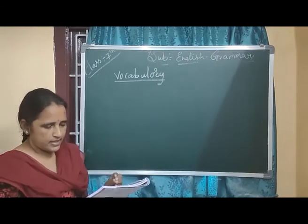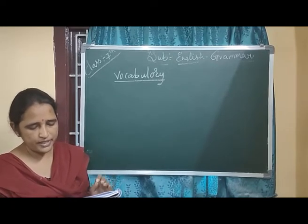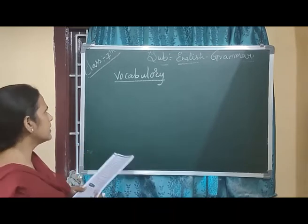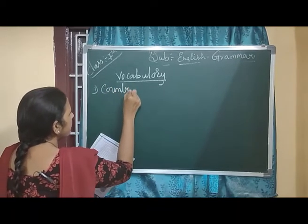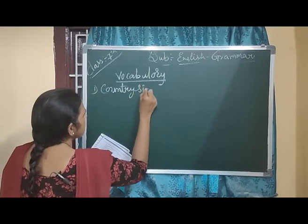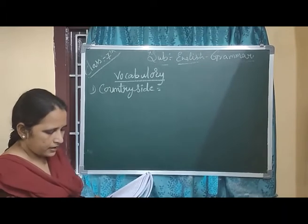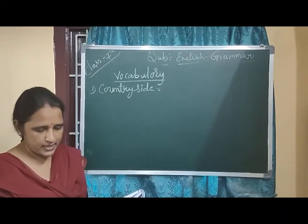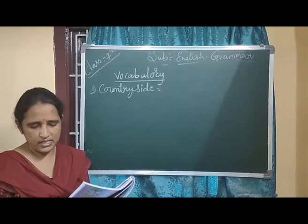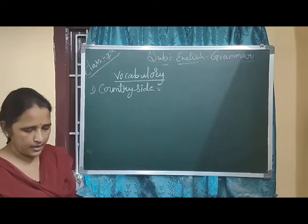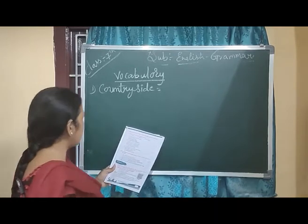Now coming to the vocabulary part. A word is underlined and you have to tell the correct meaning for it. 'He has asked me to spend a week in the countryside.' The underlined word is 'countryside.' Three options are given: A — a land with towns and cities, B — a neighboring country, C — a land outside towns and cities with fields, woods, etc. Countryside means a village, so option C is the correct answer.